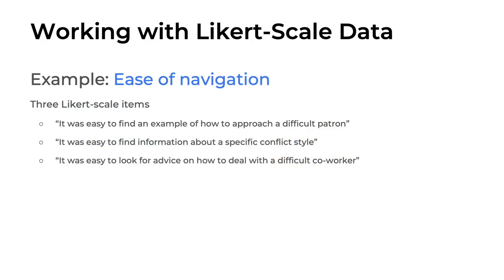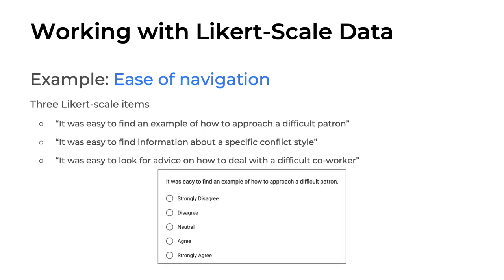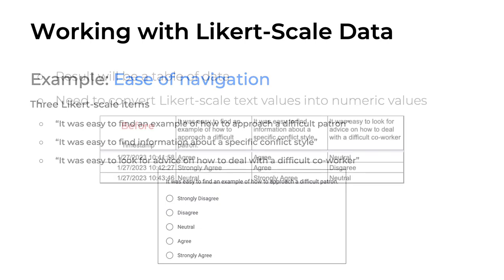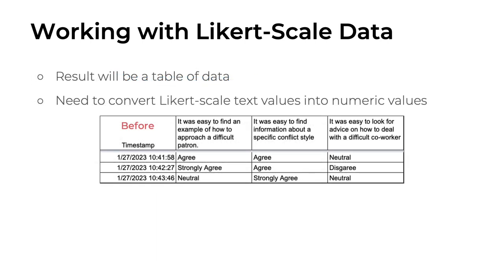First up, Likert scale data. Likert scale data comes in the form of ratings that use some kind of a scale, often a five-point or seven-point scale, such as strongly disagree to strongly agree. Here's an example of three Likert scale items: it was easy to find an example of how to approach a difficult patron, or it was easy to find information about a specific conflict style. And you can see participants could respond using one of five responses.